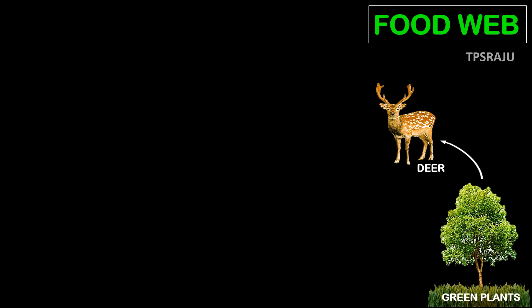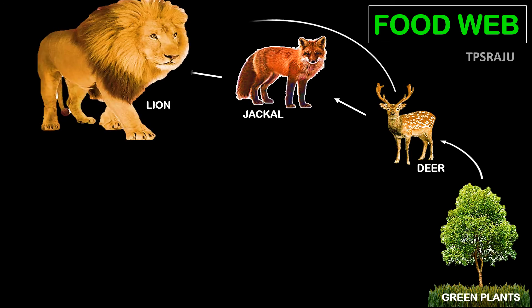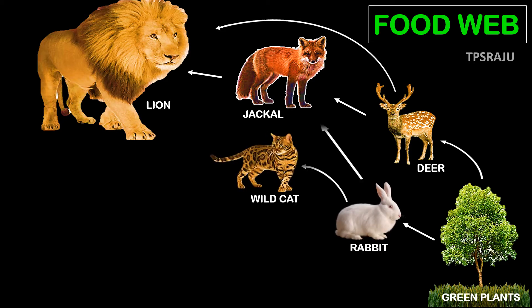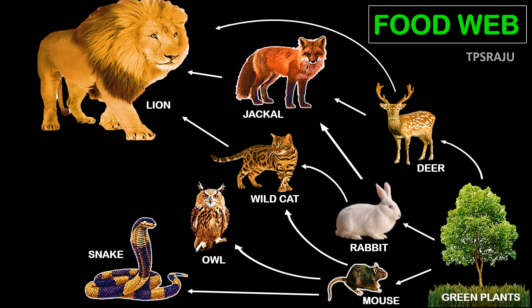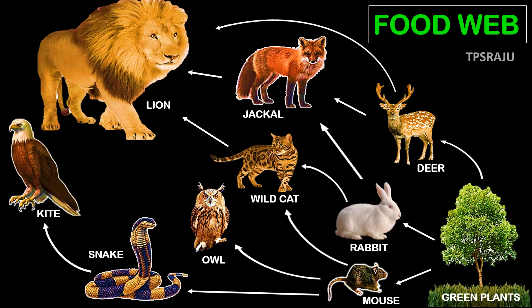Next, we are going to learn about food web. For example, in a forest, there are different kinds of food chains. Plants are always producers, and any food chain starts with producers. Deer eats plants, jackal eats deer, and lion eats both deer and jackal. Next, rabbit eats plants, and wild cat and jackal eat rabbit. Wild cat is also eaten by lion. Next, mouse eats plants, and mouse is eaten by wild cat, owl, and snake. Kite eats snake. Food chains cannot always be represented by a straight line. They can be branched, with several food chains connected to each other to form a web. This system of interconnected food chains is called a food web.